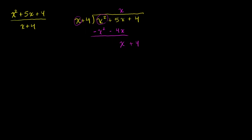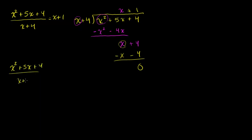x goes into x one time. Plus 1. 1 times x is x, 1 times 4 is 4. Subtract — it cancels out, so we have no remainder. This simplifies to x plus 1. There's another way you could have done this: factor the numerator. x squared plus 5x plus 4 over x plus 4 equals x plus 4 times x plus 1, all over x plus 4 — since 4 times 1 is 4 and 4 plus 1 is 5. The x plus 4 cancels, leaving just x plus 1.